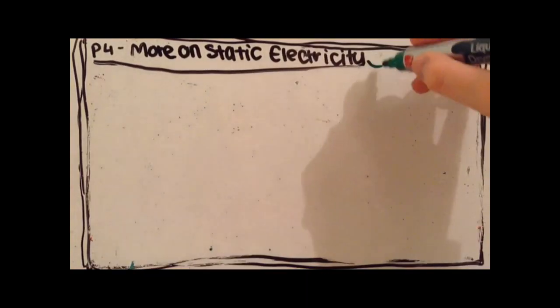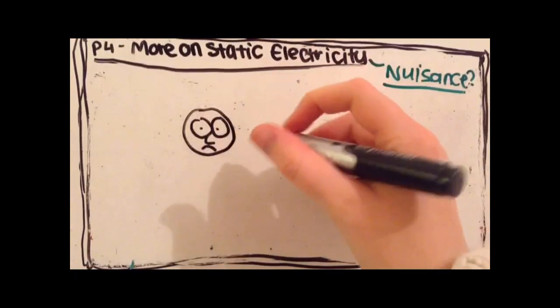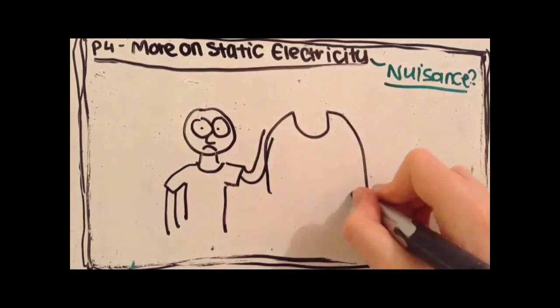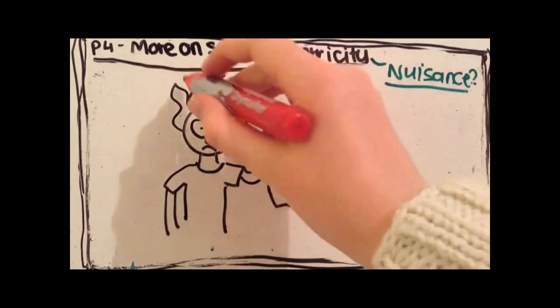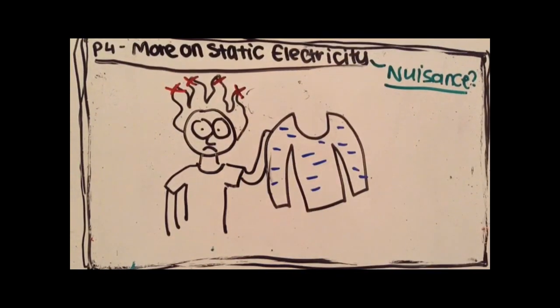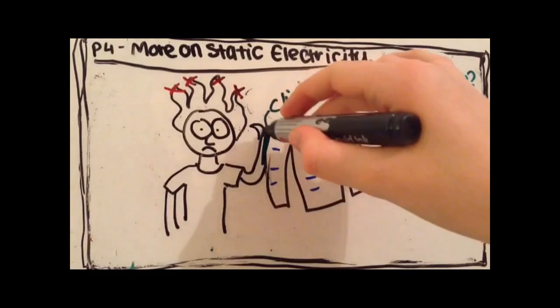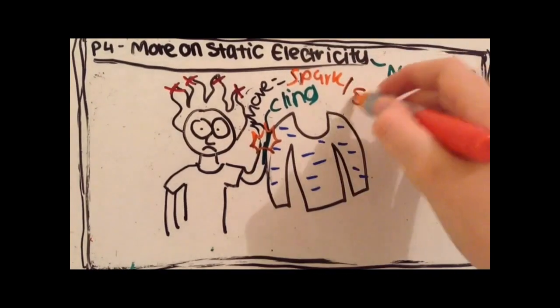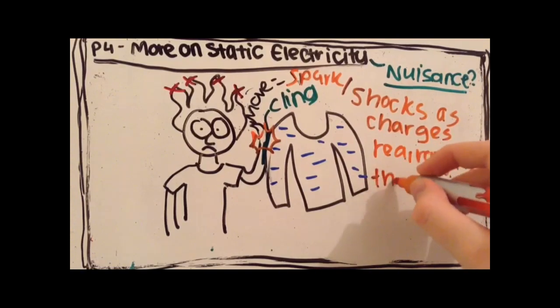Another reason why static electricity can be a nuisance is how clothing clings and crackles. When synthetic clothes are dragged over each other, like in a tumble dryer or over your head, electrons get scraped off the synthetic clothes, leaving static charges on both parts. That leads to the inevitable attraction. They stick together and cling to you, as opposite electric charges are attracted to each other. And there can be little sparks or shocks as the charges rearrange themselves.